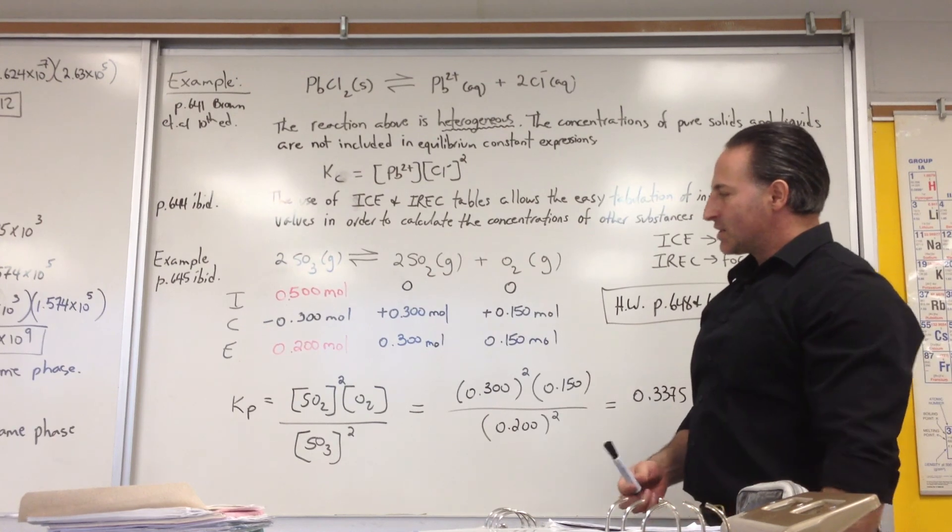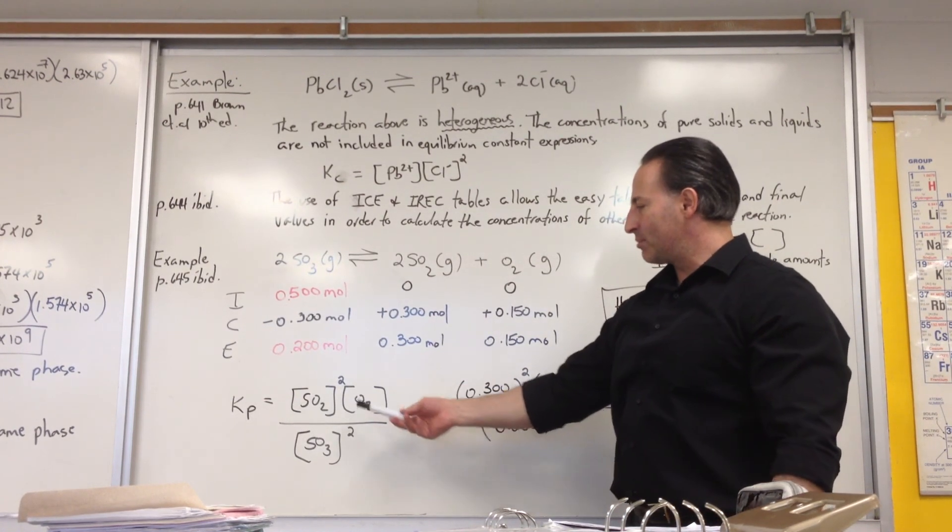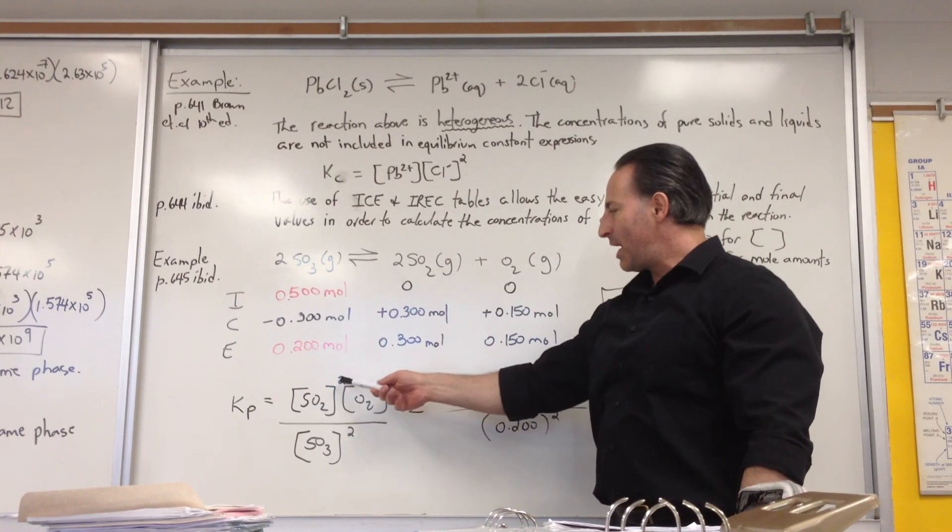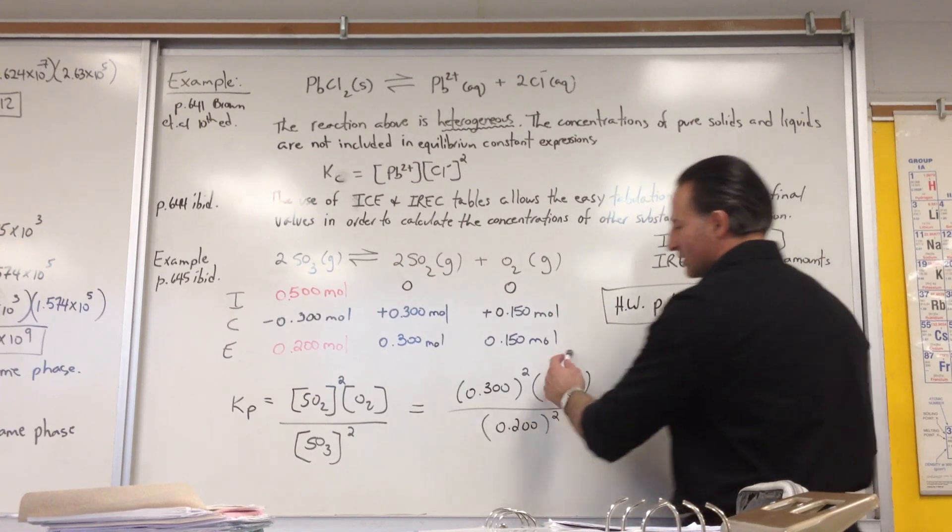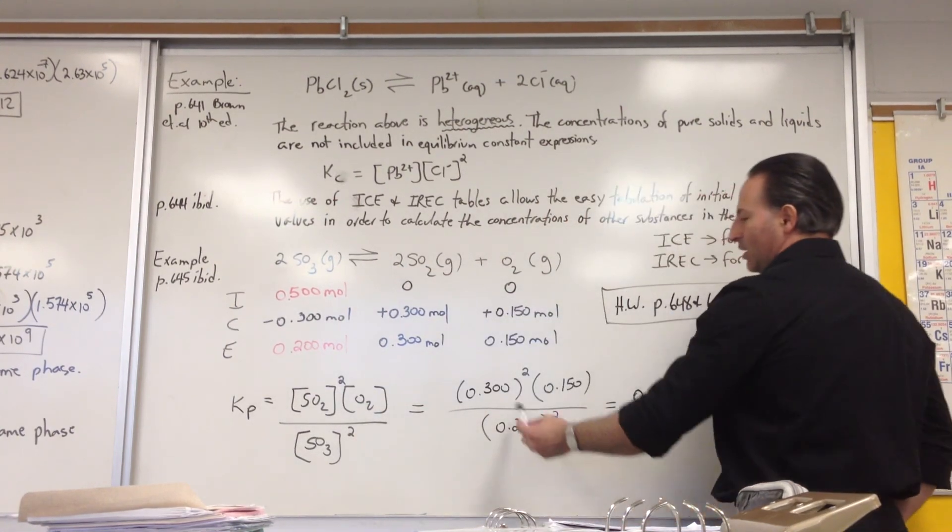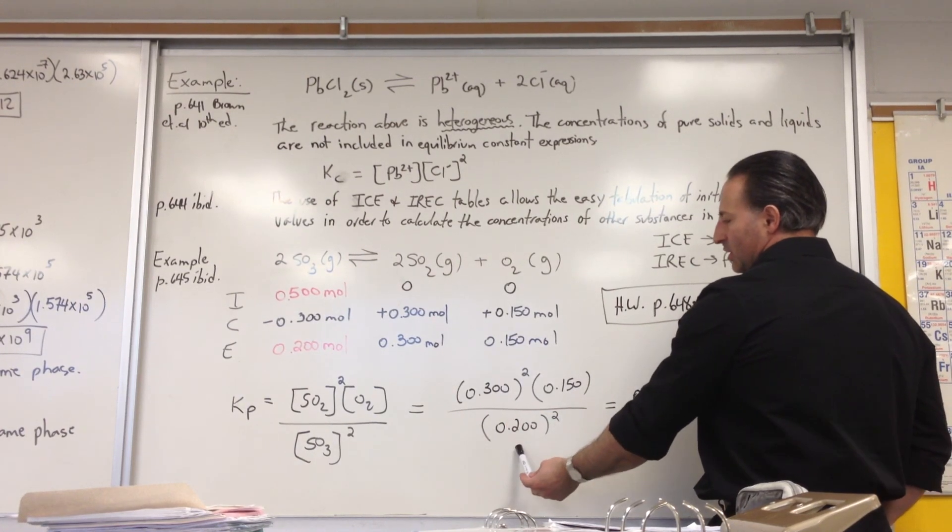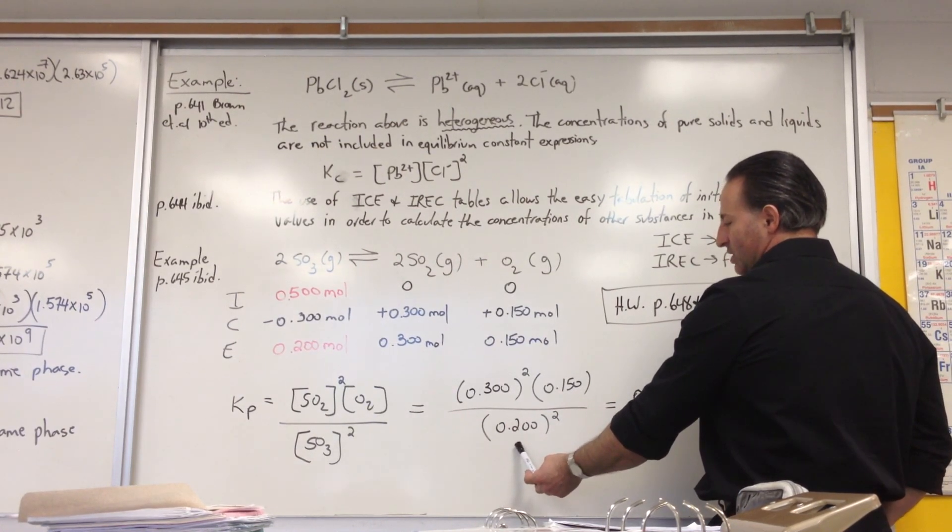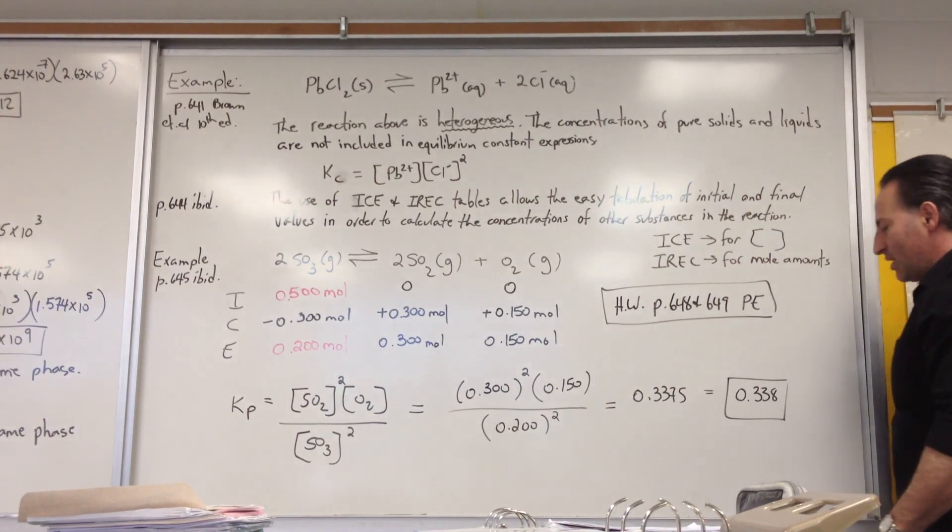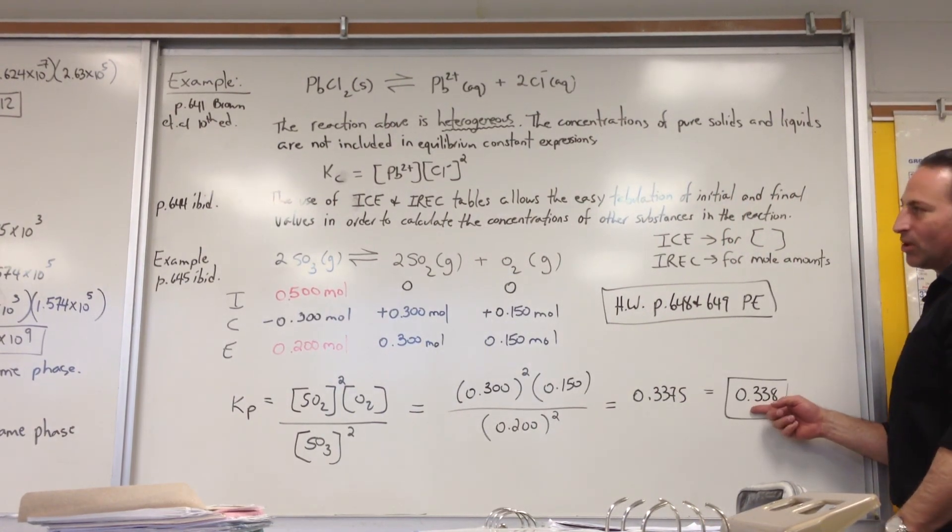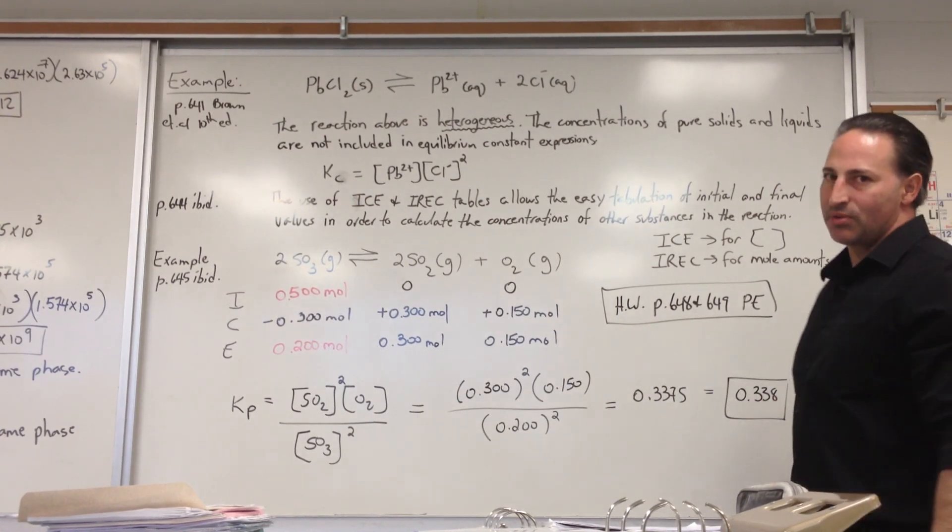The equilibrium constant is calculated by putting products over reactants. Remember to put the coefficients as powers. And then you enter all the numbers that you obtained in this last line of the calculation. This is the concentration of sulfur dioxide. Here's the concentration of oxygen. Here's the concentration of sulfur trioxide. Notice these two are raised to the power of 2. Final answer, 0.337, which we're allowed to report to three significant figures because none of the numbers have more than three significant figures. Final answer, 0.338.